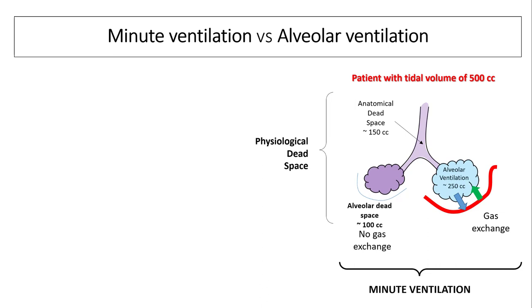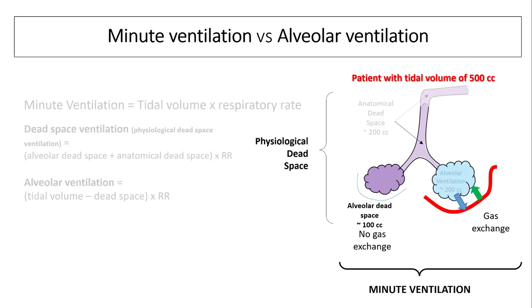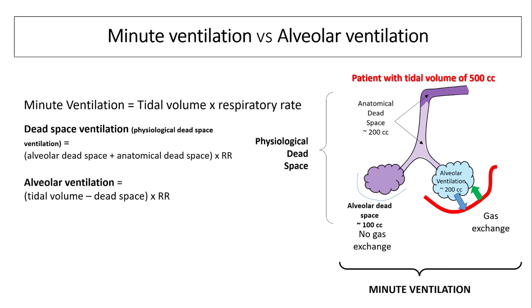If you have alveolar dead space — for example, around 100 cc — it takes away from the normal alveoli, so your alveolar ventilation is only 250 cc instead of 350. If your tidal volume remains the same, in certain situations you can have an increase in anatomical dead space — for example, adding something to your breathing circuit. That again takes ventilation away from the normal functioning alveoli, so anatomical dead space is now 200 cc instead of 150, and alveolar ventilation has dropped to 200 cc.